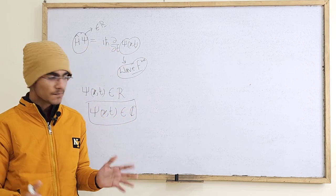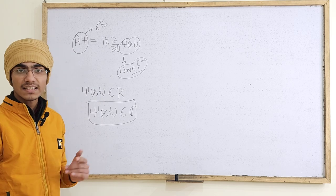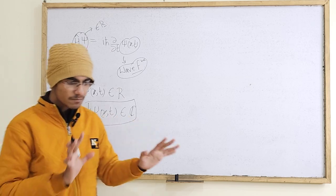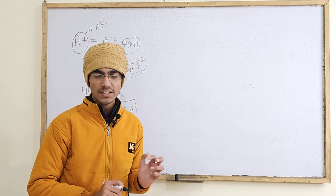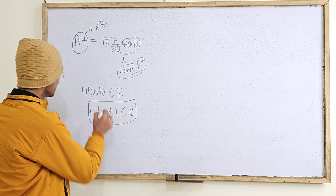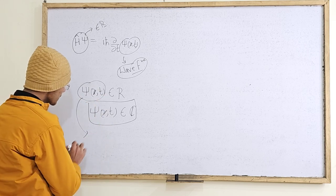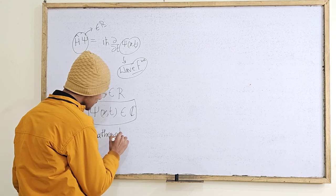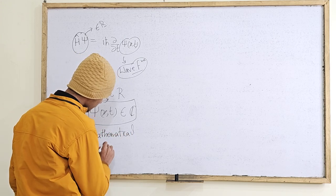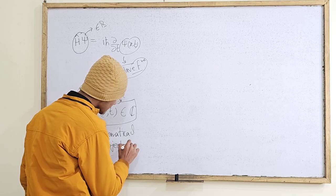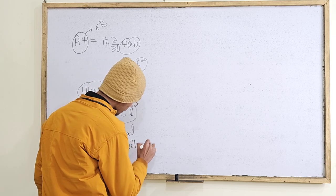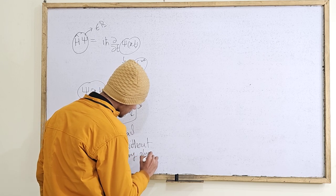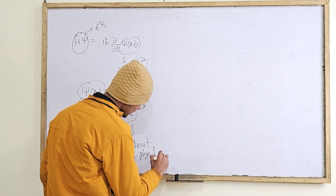The wave function has no physical significance. You can have physical significance by some manipulation on the wave function, but first of all, the wave function is a mathematical object — without any physical significance.